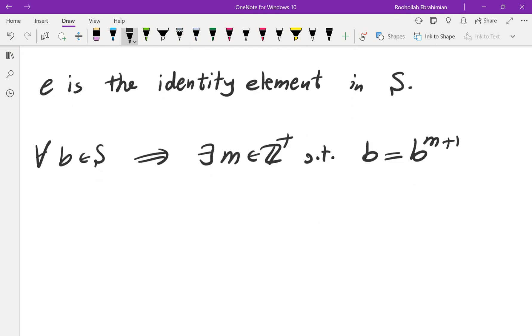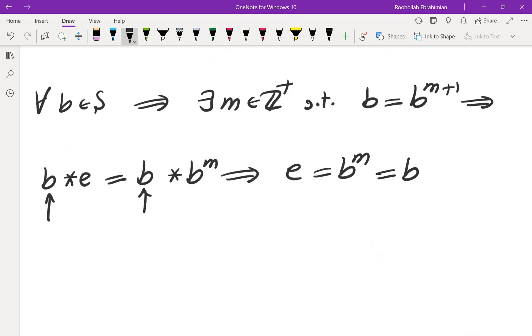Now, on the left, we have b. So we can write this one down as b star e. And on the right, I can write it down as b to the m star b, or rather, b star b to the m. Now, I can use cancellation from the left. So I'm going to cancel this. That would give me e equals b to the power of m. And this is exactly b star b to the m minus 1, and it's also b to the m minus 1 star b.